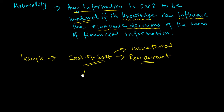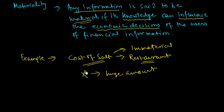But if some item of expense — say Item X — is of a huge amount, then it must be recorded and shown as a separate item of expense in the income and expenditure statement of the restaurant.